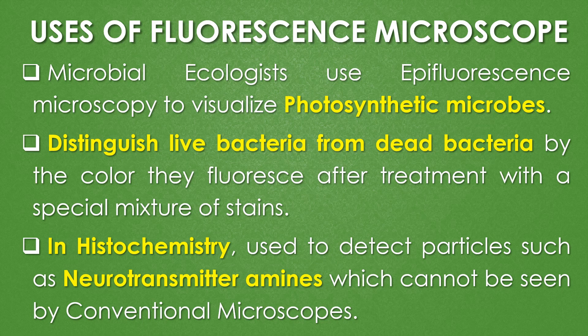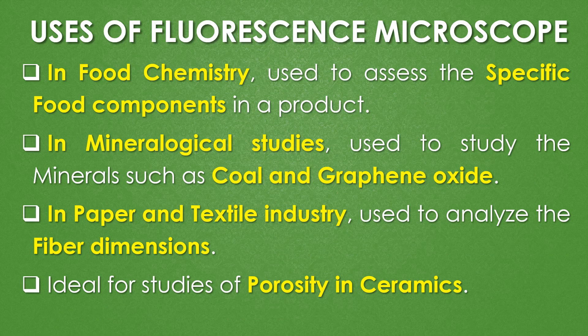The fluorescence microscope is used by microbial ecologists to visualize photosynthetic microbes for observation of various photosynthetic pigments. It is used to differentiate live bacteria from dead bacteria by the color they fluoresce after treatment with a special mixture of stains. In histochemistry, it is used to detect particles such as neurotransmitter amines which cannot be seen by conventional light microscopes. In food chemistry, it is used to assess specific food components. In mineral studies, it is used to study minerals such as coal and graphene oxide.